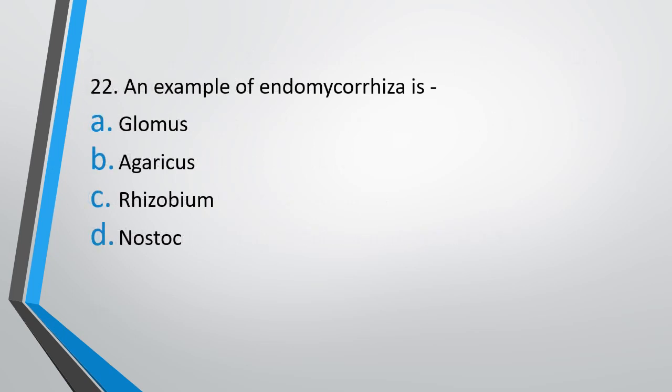Question number 22. An example of endomycorrhizae is? Option A, Glomus; Option B, Agaricus; Option C, Rhizobium; Option D, Nostoc. Endomycorrhizae, the correct answer is option A, Glomus.